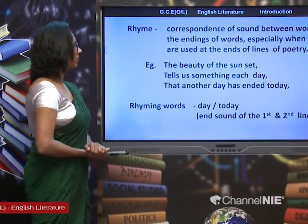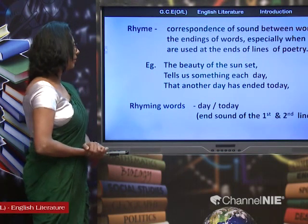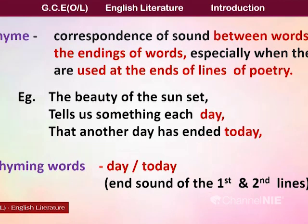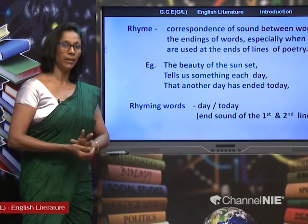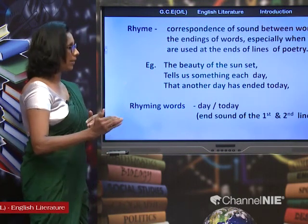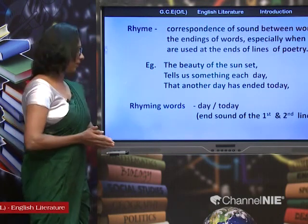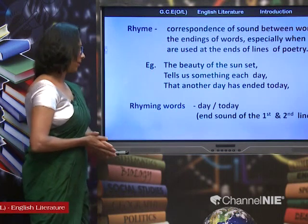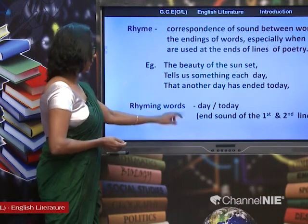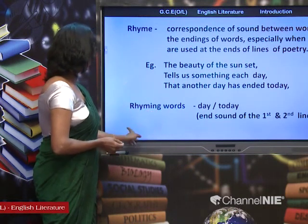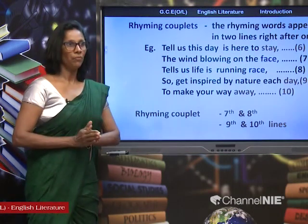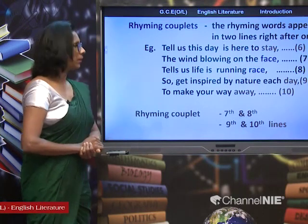Rhyme: correspondence of sound between words or the endings of words, especially when used at the ends of lines of poetry. For example: 'The beauty of the sunset tells us something each day, that another day has ended today.' The end sound of 'day' and 'today' is the same sound '-ay.' So the rhyming words are 'day' and 'today,' the end sounds of the first and second lines. When it comes to rhyming words, we have to learn about two patterns: rhyming couplets and alternate rhyming.